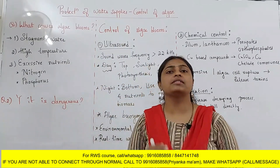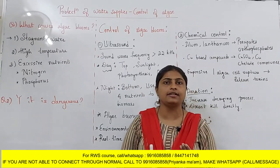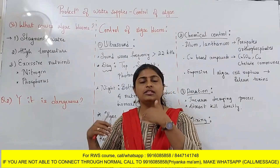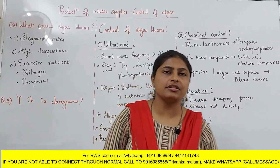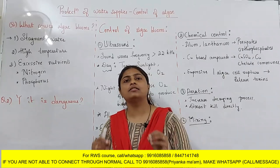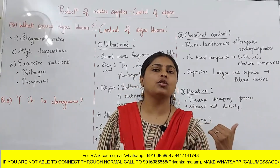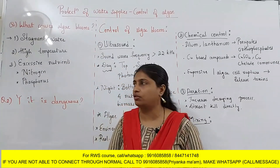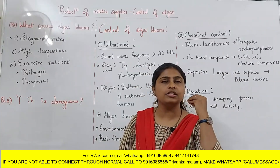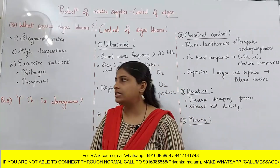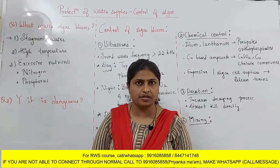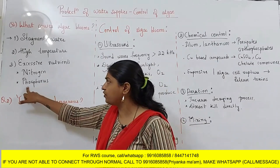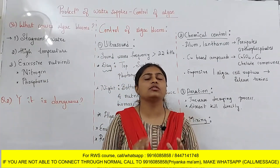Another reason is the presence of excessive nutrients. Chemical industries, sugar industries, domestic waste, and fertilizer industries all release their waste into the water source, along with warm water. Most of the chemicals present in these wastes are nitrogen and phosphorus. Phosphorus mostly helps for the growth of the algae, creating a very good environment for it.